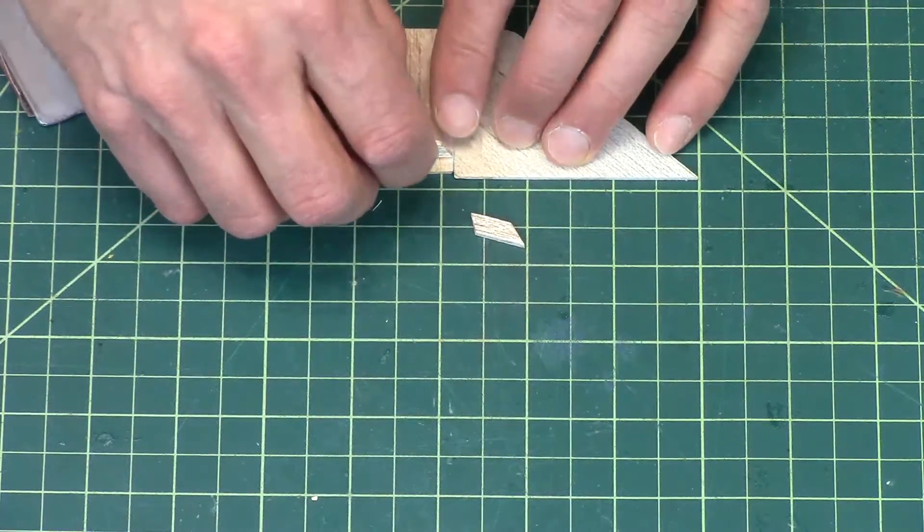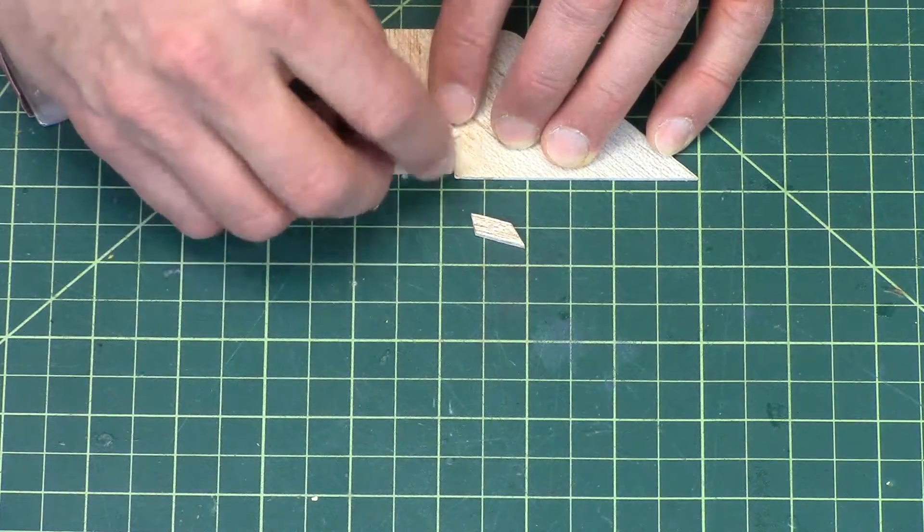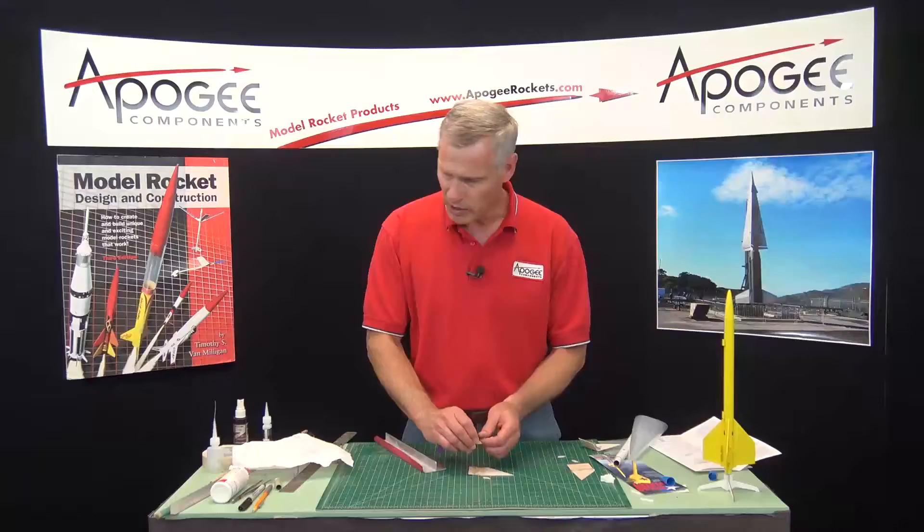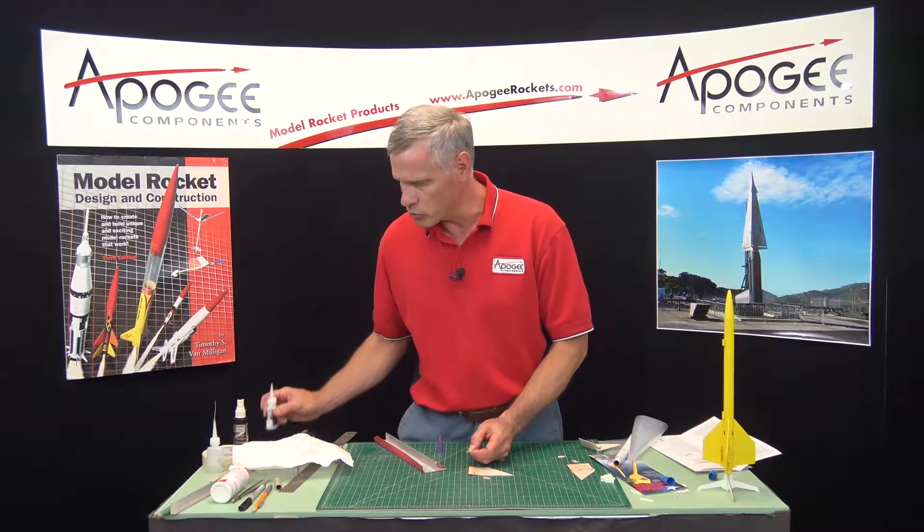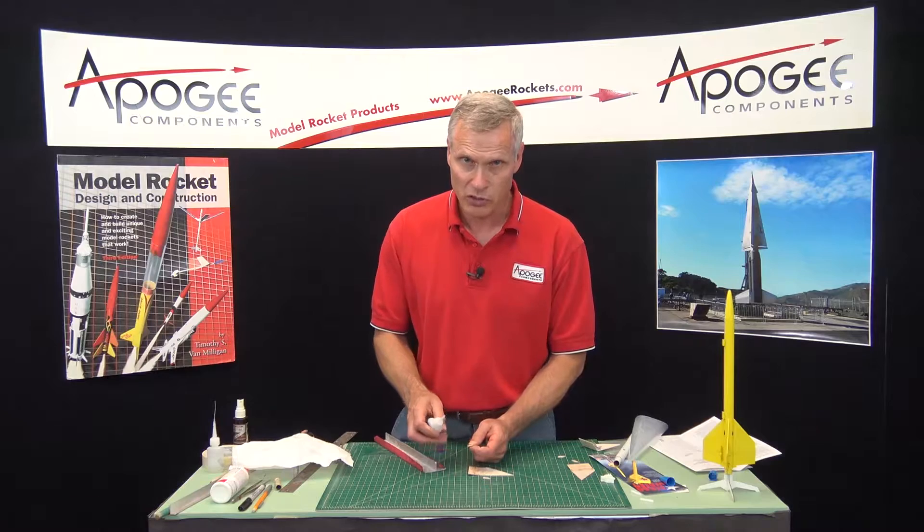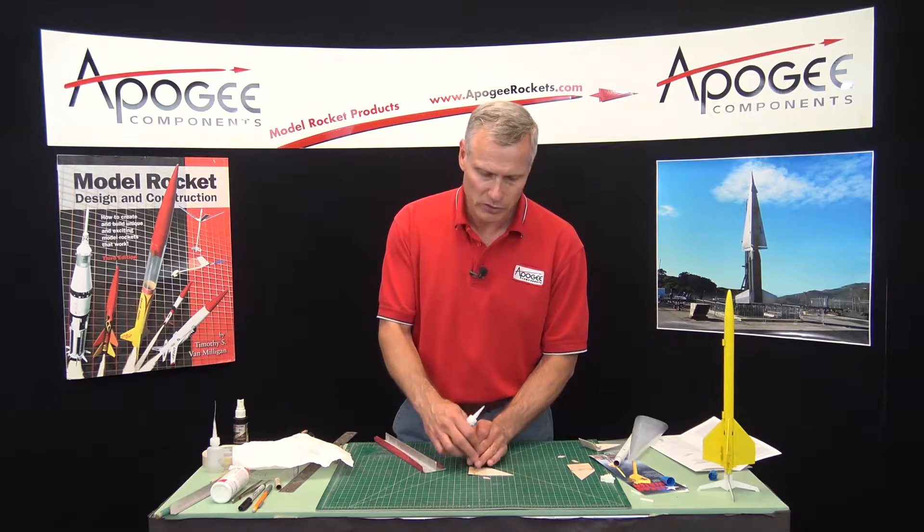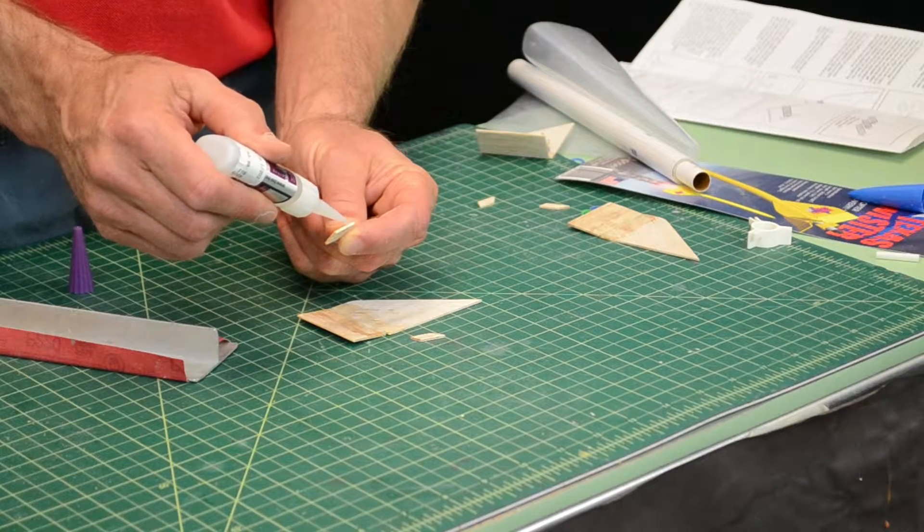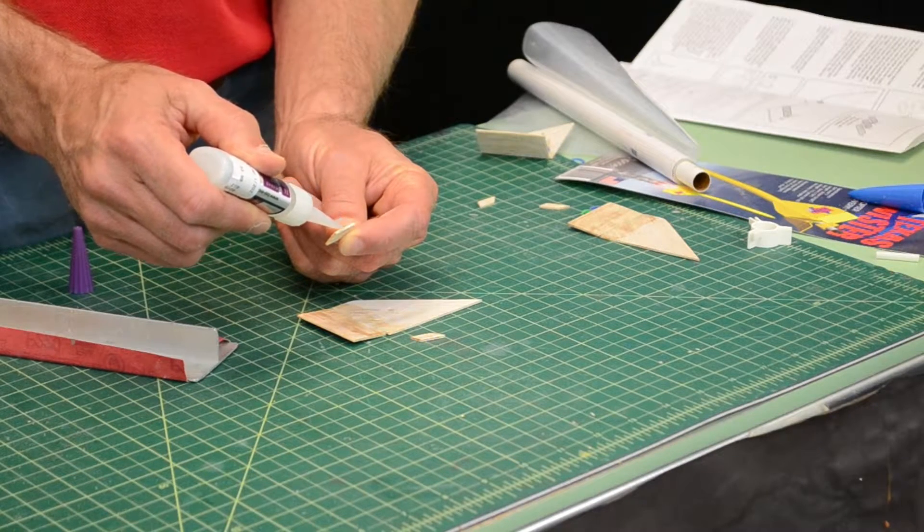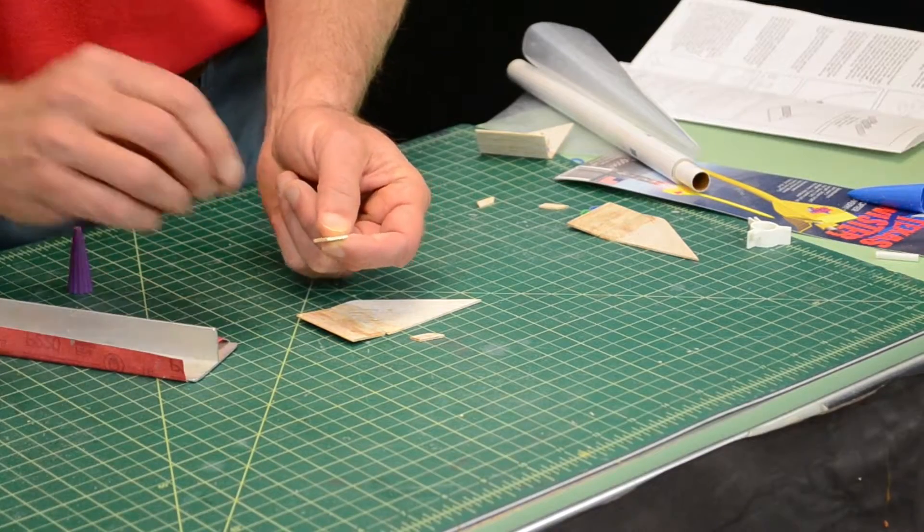We're going to glue these approximately one-eighth inch from the edge of the flap. And if you've been using super glue throughout, you're going to want to use super glue on this, even though the instructions say to use wood glue. Because wood glue doesn't really stick to super glue that well. So you need super glue to stick to super glue. So I'm just going to put a bit of thick super glue on the root edge.